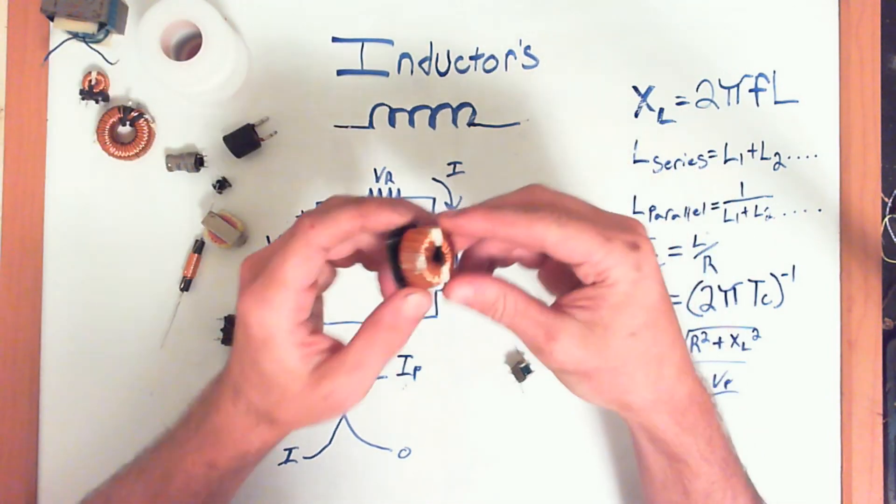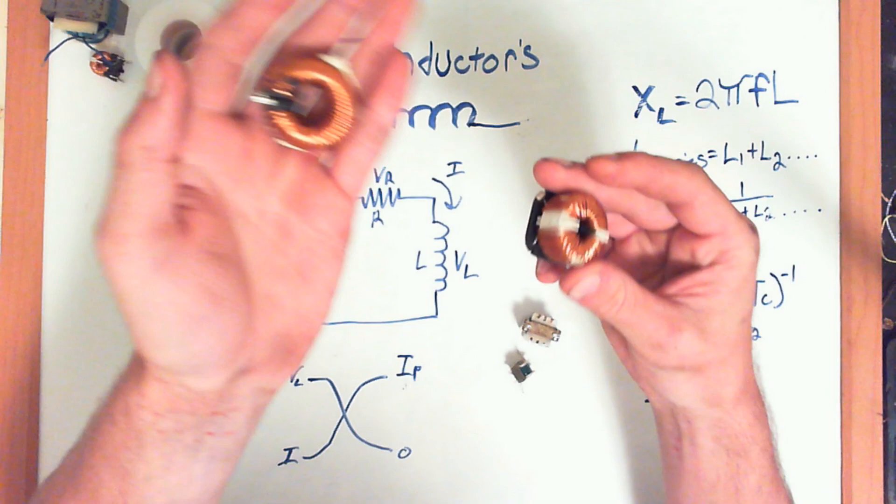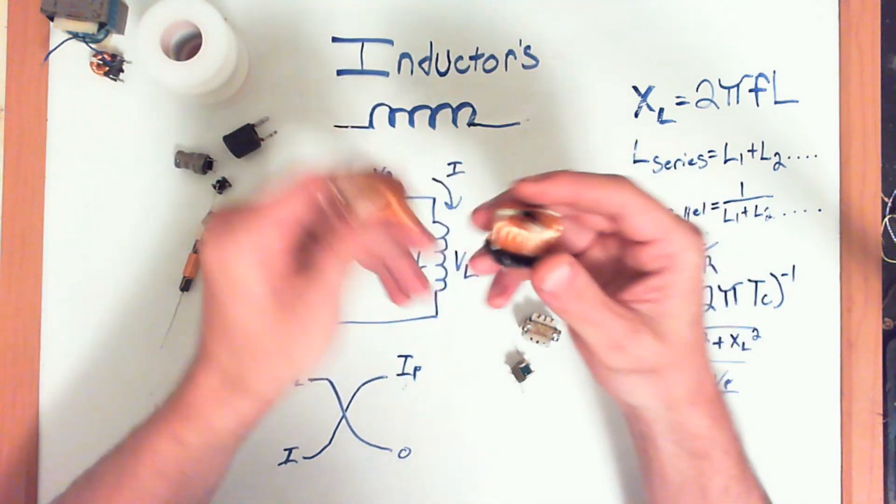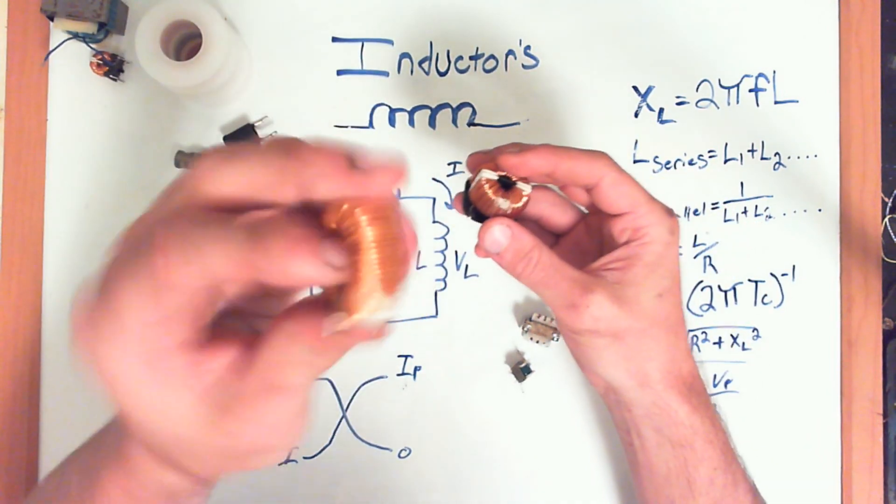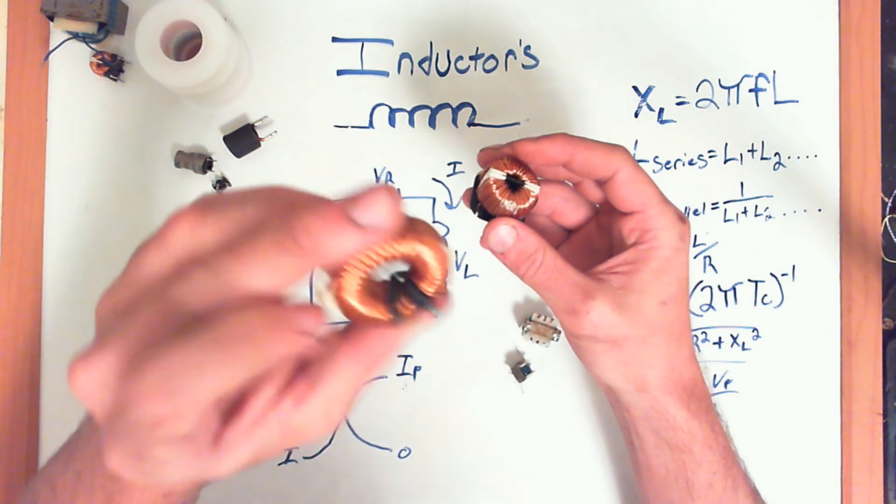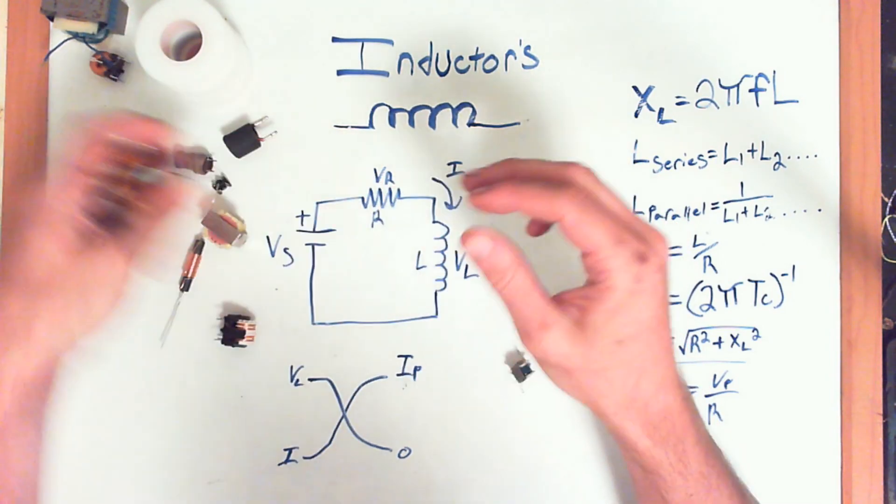They're big, they're bulky. So, building a small electronic device that requires one of these is sometimes hard, which is why they're trying to come up with different ways to do it.